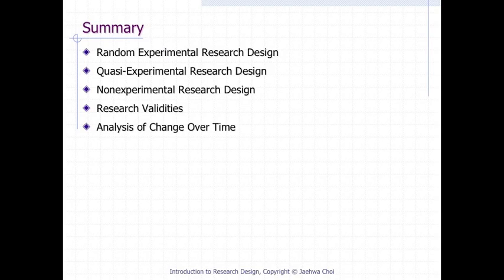In this lecture we learned: (1) the concept and examples of random experimental research design, (2) the concept and examples of quasi-experimental research design, (3) the concept and examples of non-experimental research design, (4) the concept and examples of research validities, and (5) the concept and examples of analysis of change over time.